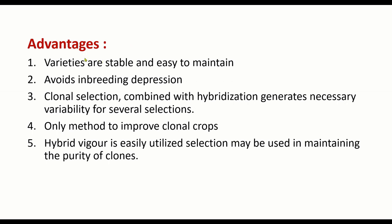Advantages of clonal selection: first, varieties are stable because they are all clones and are uniform. Second, it avoids inbreeding depression because superior lines are selected. Third, clonal selection combined with hybridization generates necessary variability for further selections — when selected clones are used as parents in a hybridization program, we get necessary variability, which is applicable in crop plants where both sexual and asexual reproduction are possible.